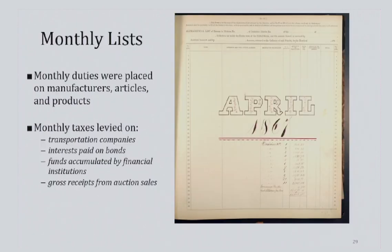Monthly specific duties were placed on a variety of articles and products ranging from ale to zinc. Monthly taxes were also levied on receipts of transportation companies, interest paid on bonds, surplus funds accumulated by financial institutions, and more.